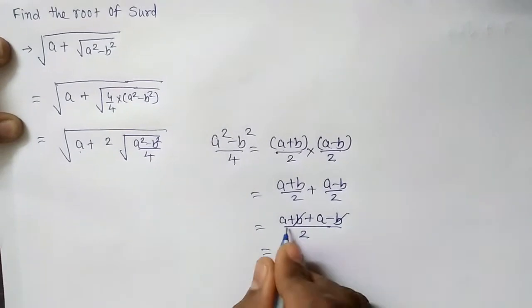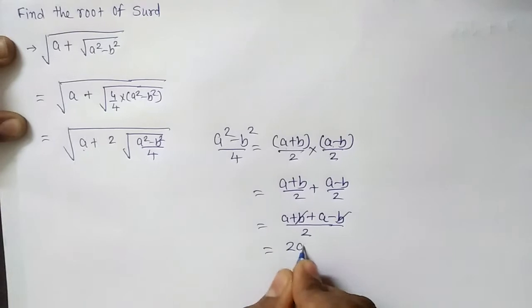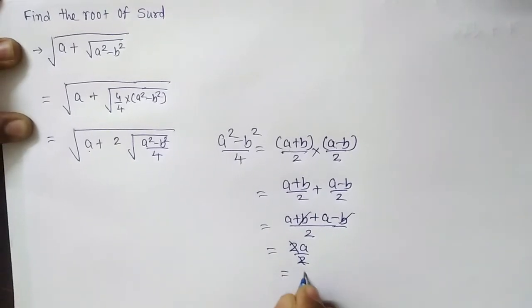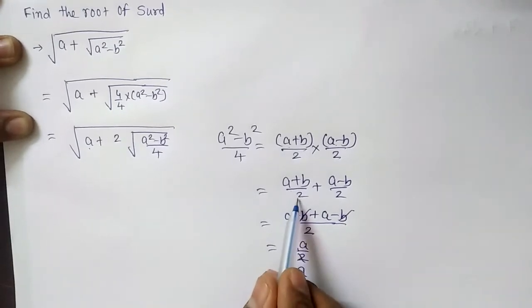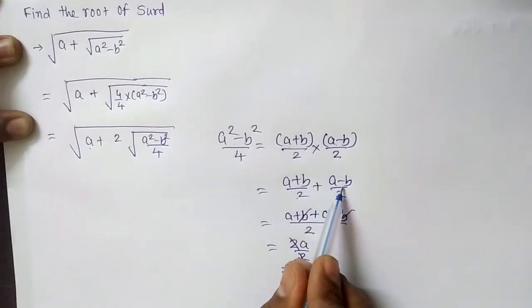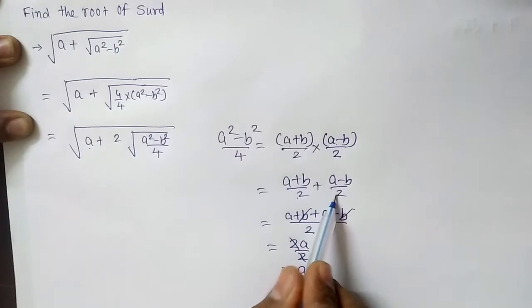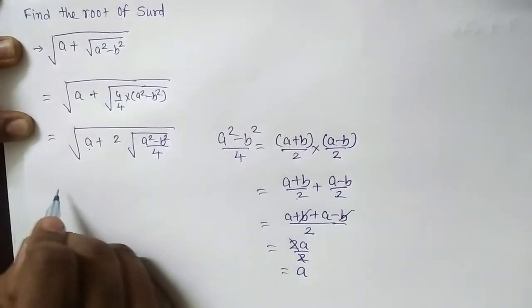You can see it is plus b minus b will be 0. So the remaining is a plus a, that is 2a upon 2. 2, 2 will be cancelled, then answer is a. So these are the two factors of a plus b by 2 and a minus b by 2.